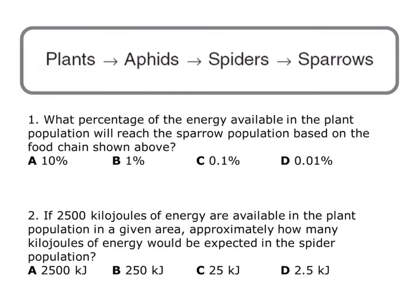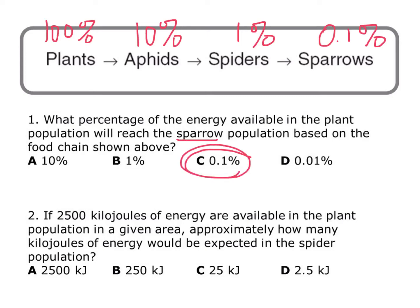Let's go through a few practice problems to make sure you understand. First: what percentage of energy available in the plant population will reach the sparrow population based on the food chain shown above? Plants have 100% of the energy because they produced it. Moving the decimal: 10%, then 1%, then 0.1%. They asked how much would reach the sparrow population, and so that is 0.1%.